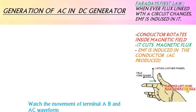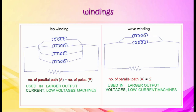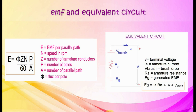Windings of DC machine are classified into lap winding and wave winding. In lap winding, number of parallel paths equals number of poles — used in machines handling large current. In wave winding, number of parallel paths equals 2 — used in machines handling large voltage. EMF induced in each parallel path of winding is given by E equals phi ZN by 60 times P by A, where N is speed in RPM, Z is number of armature conductors, P is poles, A is number of parallel paths, and phi is flux per pole.